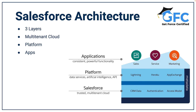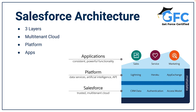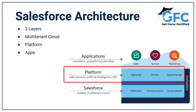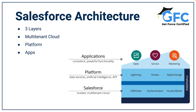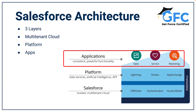Let's talk about the Salesforce architecture in a little more detail. The best way to visualize it is to think of it in three layers. The foundational level is a trusted multi-tenant cloud, and everything resides in this cloud. On top of that sits the Salesforce platform, powered by metadata and made up of data services, artificial intelligence, and APIs for development. Apps sit right at the top — Sales Cloud, Service Cloud, and other Salesforce products — providing the powerful technology and functionality that customers love.